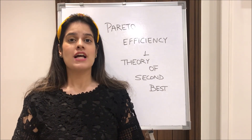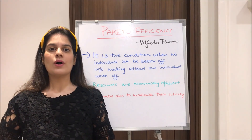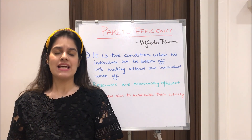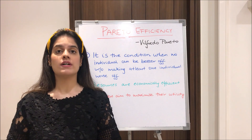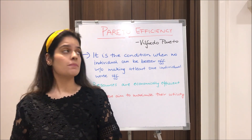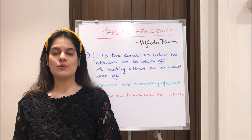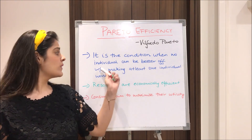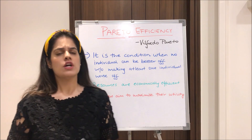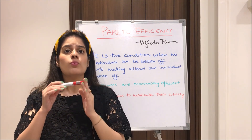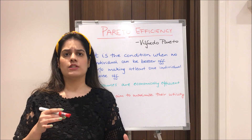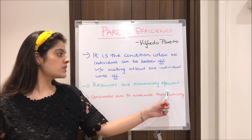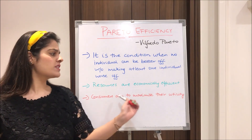Pareto efficiency is the most efficient point we can ever be at. It is also known as the theory of first best or a state of economic Nirvana. It was developed by Wilfredo Pareto, and hence the name. Coming to the definition: it is the condition when no individual can be better off without making at least one individual worse off. Two things to note are that resources are economically efficient and consumers are rational, aiming to maximize their utility.